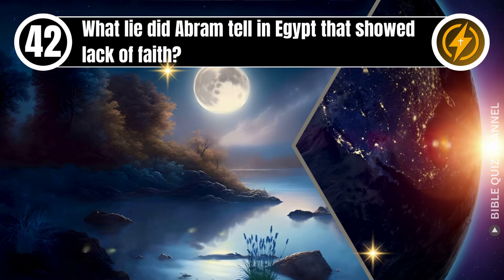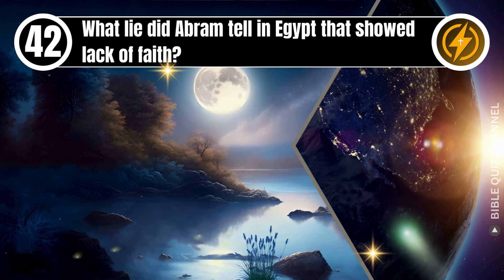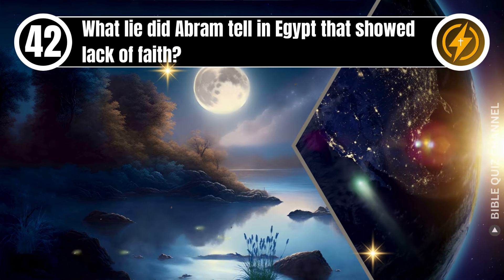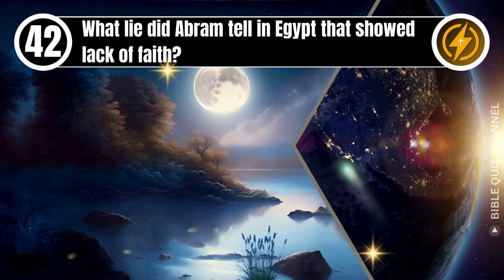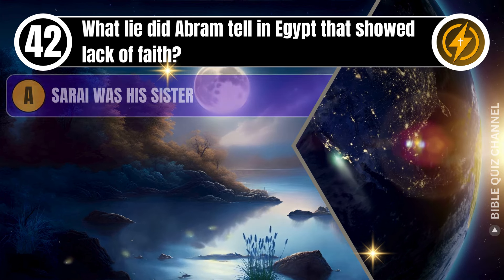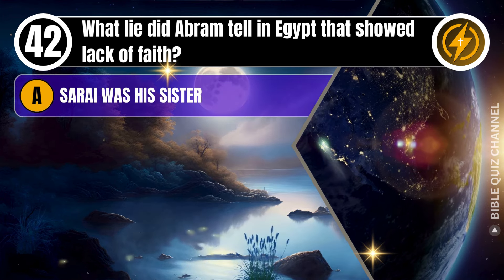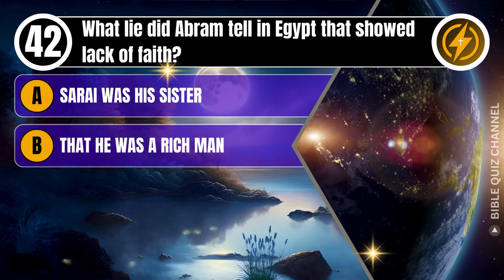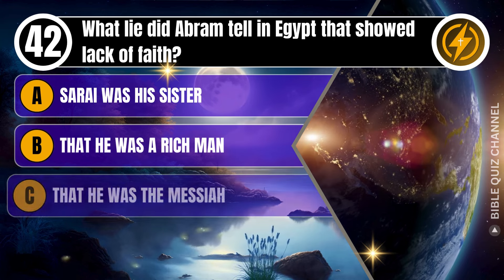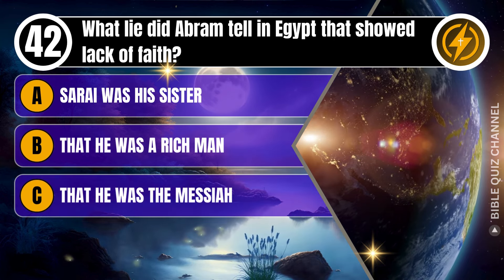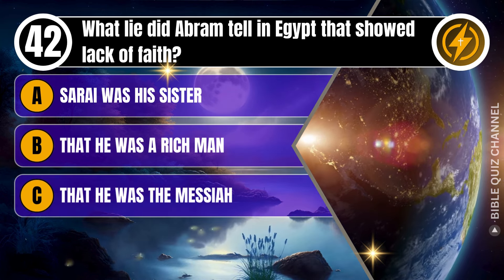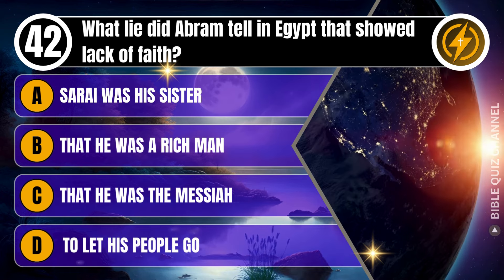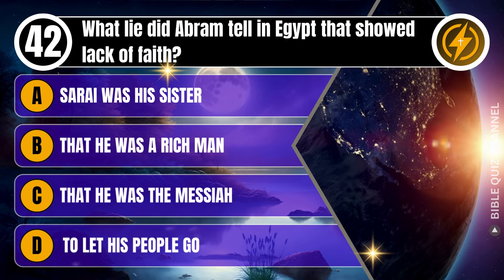Question 42. What lie did Abram tell in Egypt that showed lack of faith? A. Sarai was his sister. B. That he was a rich man. C. That he was the Messiah. D. To let his people go. You get 10 seconds.